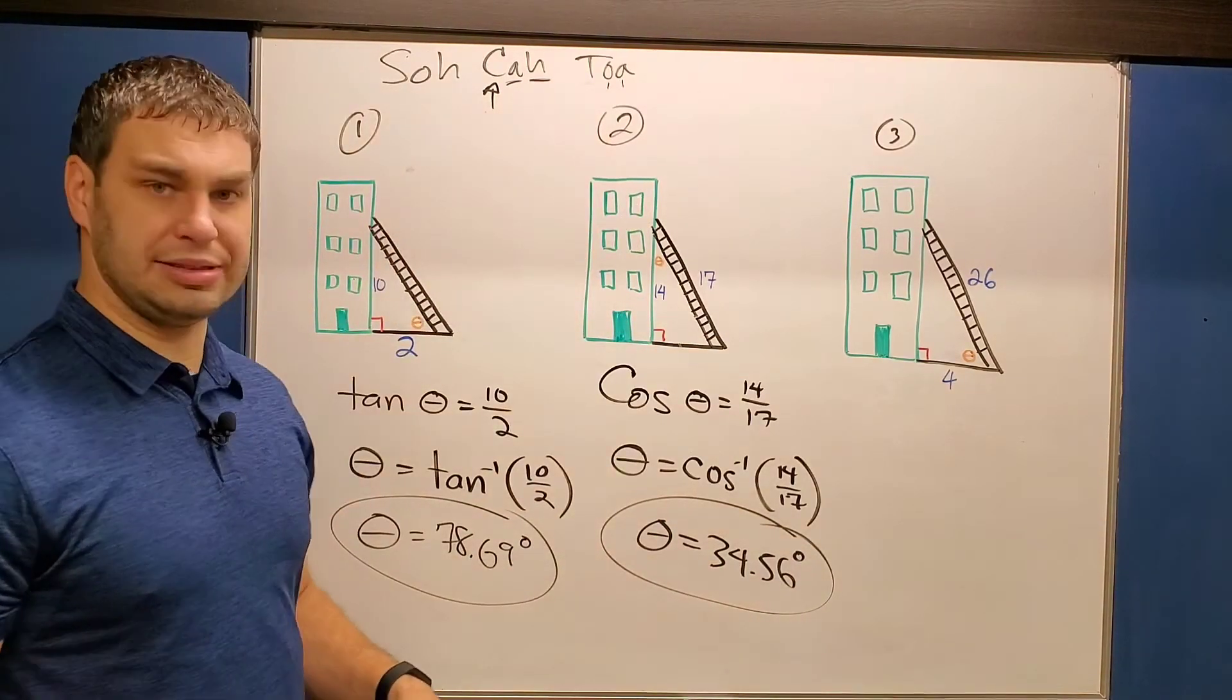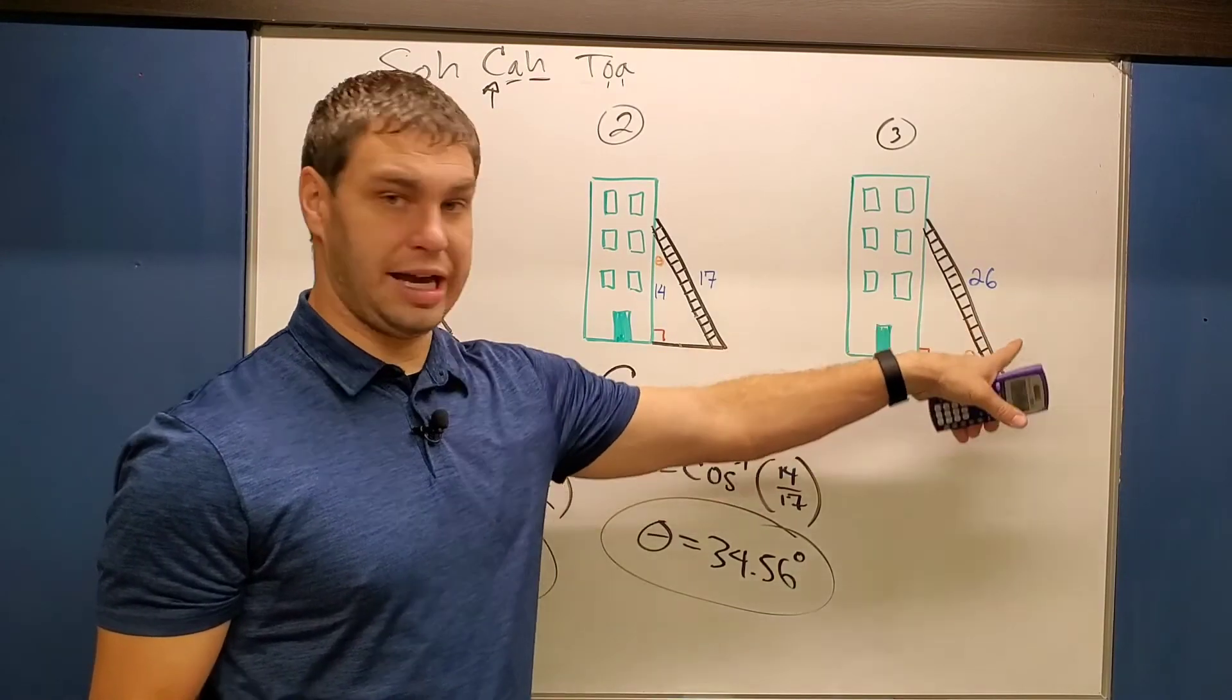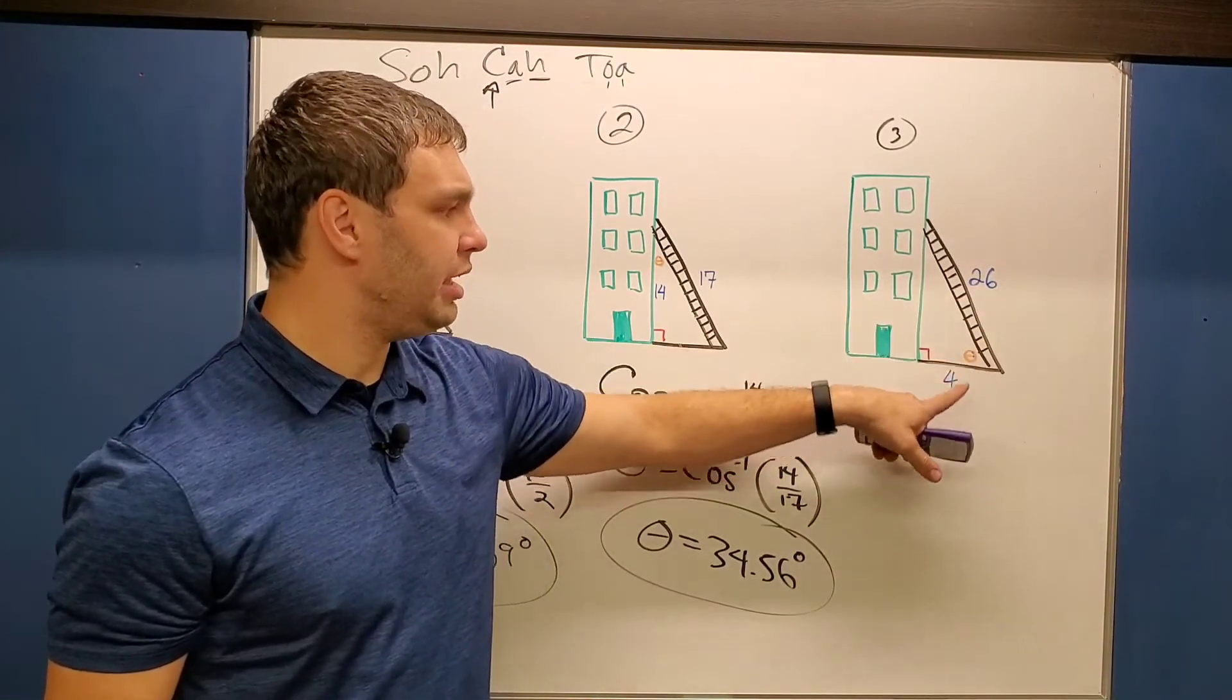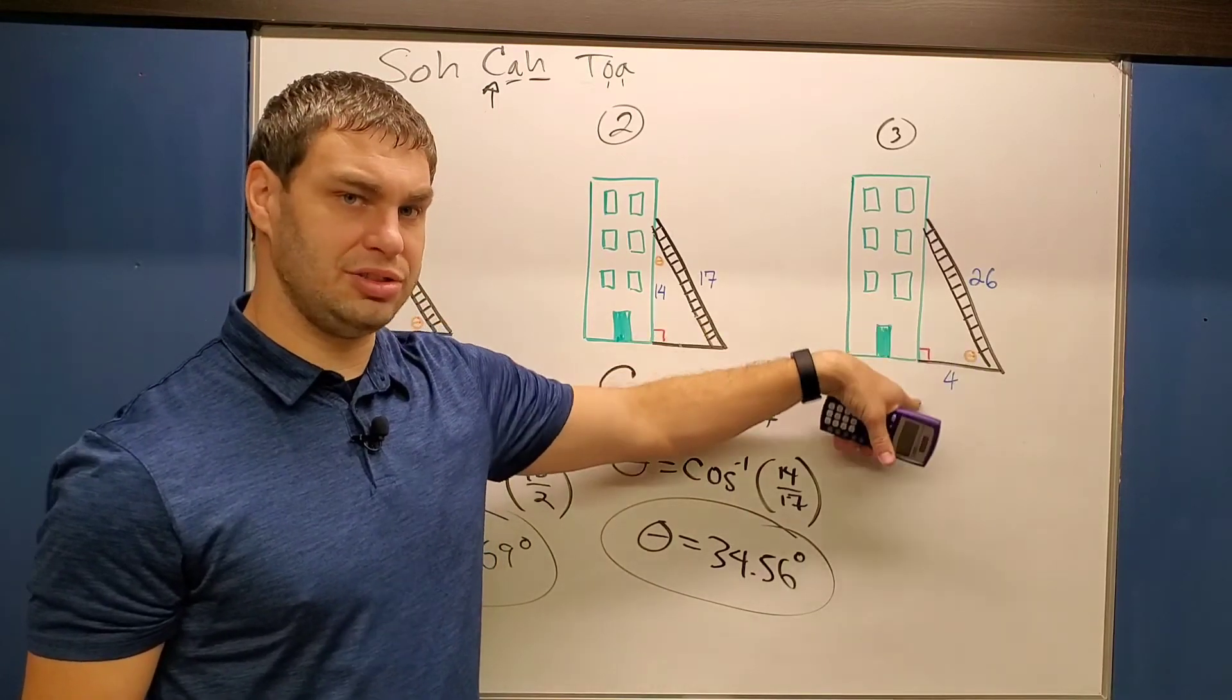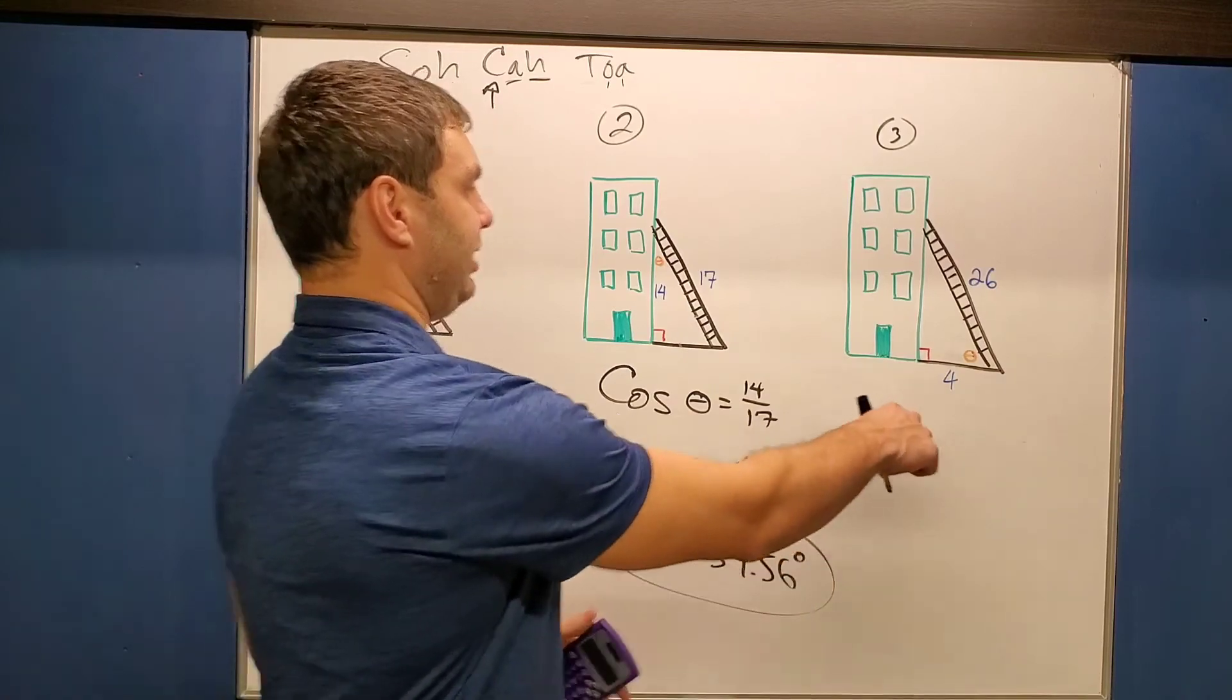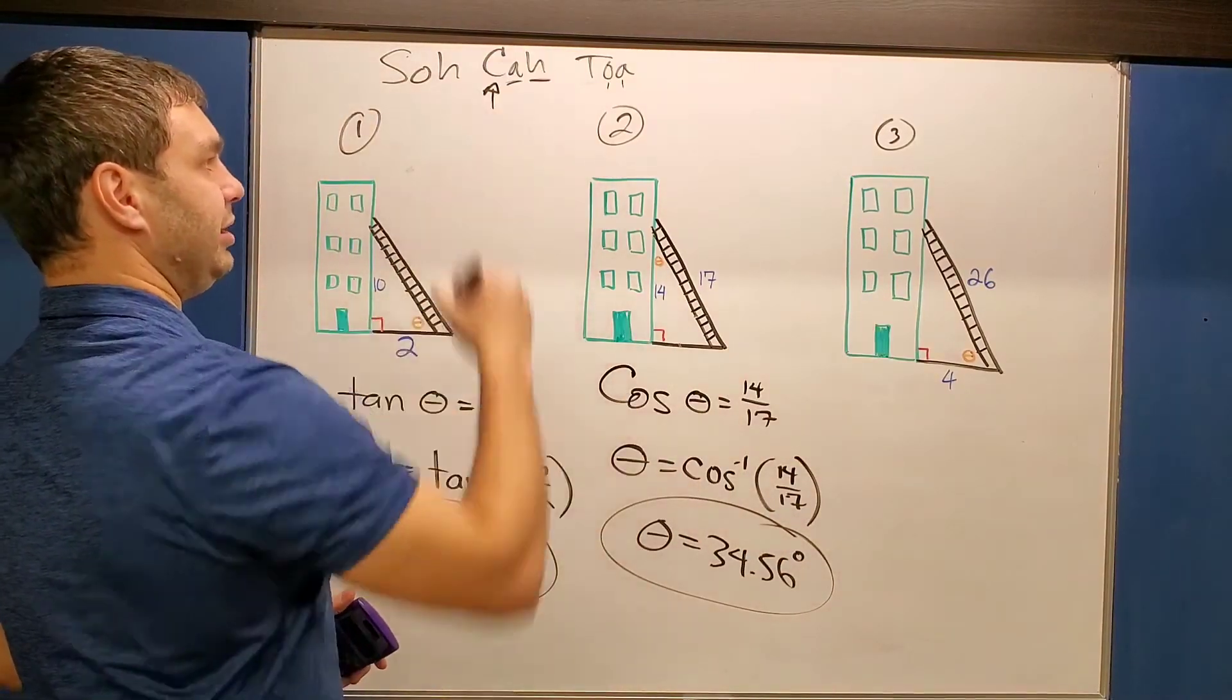Last one, number three, this time we're finding again the angle between the ground and the ladder. And I have this part, which is 4 and the 26 up here. So compared to my theta, the 4 is the adjacent side. The 26 is the hypotenuse. So when I have the adjacent and hypotenuse, again, that's going to be cosine.